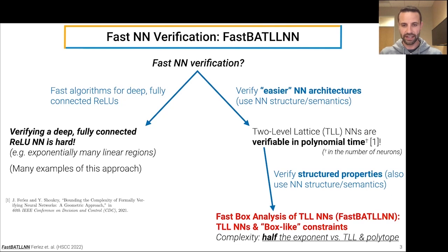It considers verifying TLL neural networks with box-like or hyper-rectangle output constraints. And so compared to our prior work on TLL neural networks with generic polytope output constraints, FastBATLLNN has half the crucial exponent in its computational complexity. So quite a bit faster.